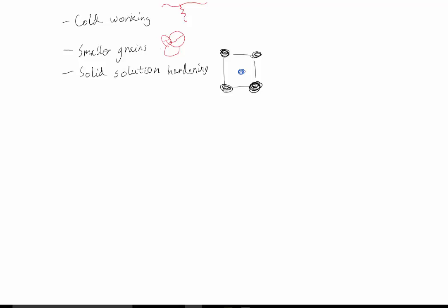Solid solution hardening is another example. An example in the real world would be steel. So let's say these are the iron molecules and these are the carbon molecules. The slip won't occur along here because when this bond breaks, the carbon atoms' bonds keep the material together.